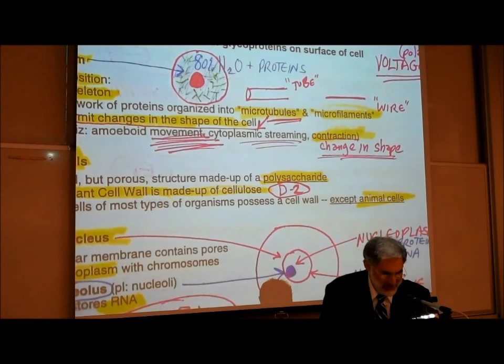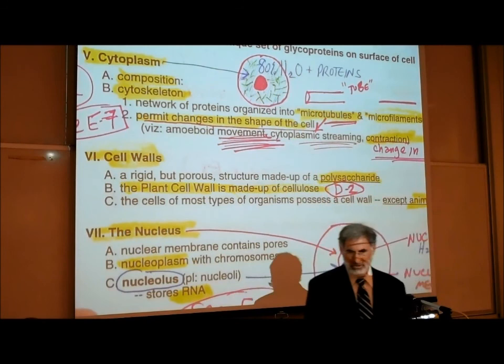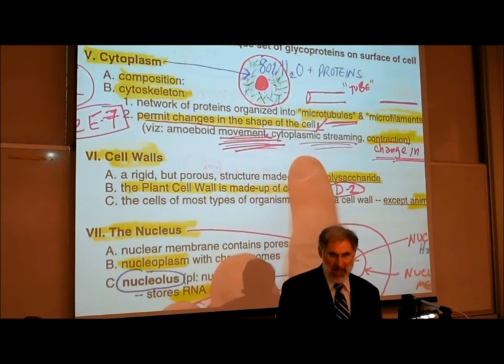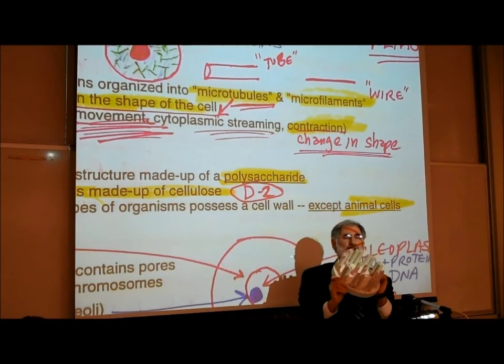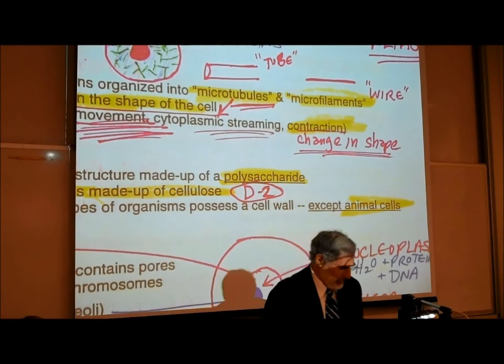Some of these proteins, especially the microtubules, can move. These microtubules that move allow movement of a cell — what's called amoeboid movement, cytoplasmic streaming, or even contraction and changes in the shape of a cell. Microtubules are the fundamental unit of movement that allow movement of cells.